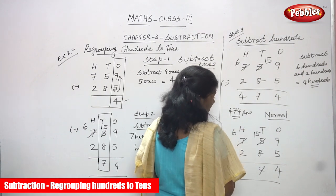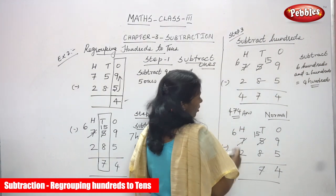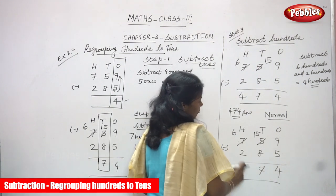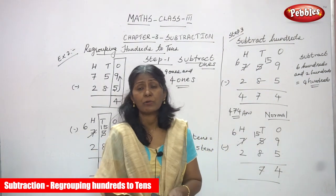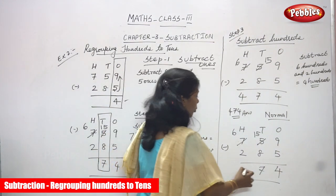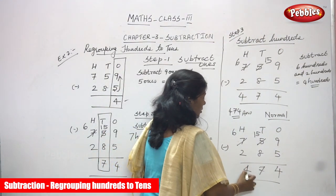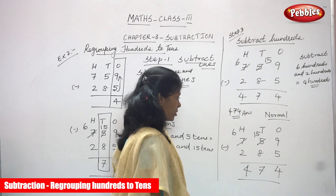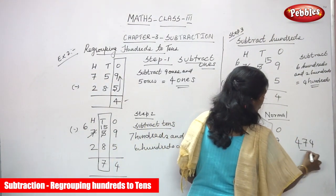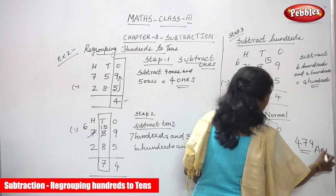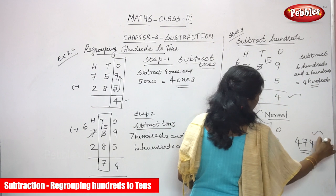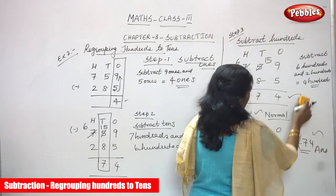Now concentrate on the hundreds place. The numbers are six hundreds and two hundreds. From six subtract two: backward counting after two — three, four, five, six. The answer is four. So the final answer is 474. Both methods give the same answer.